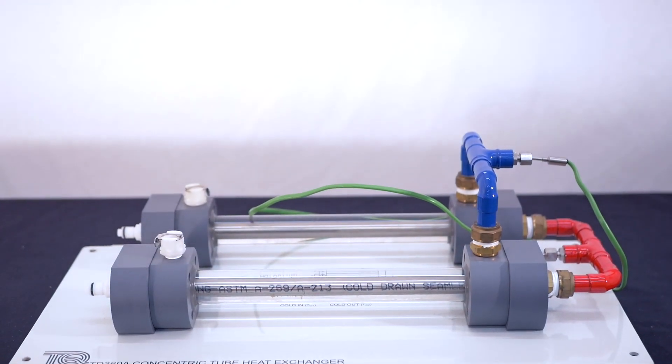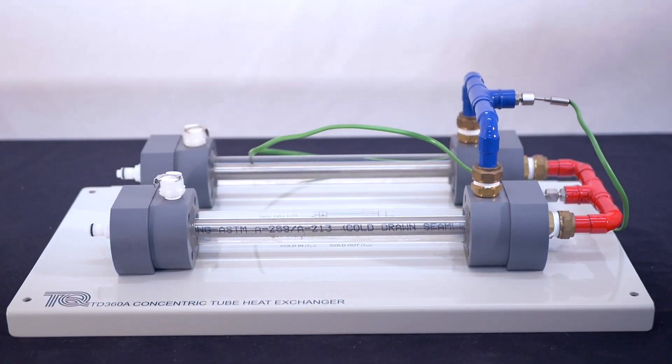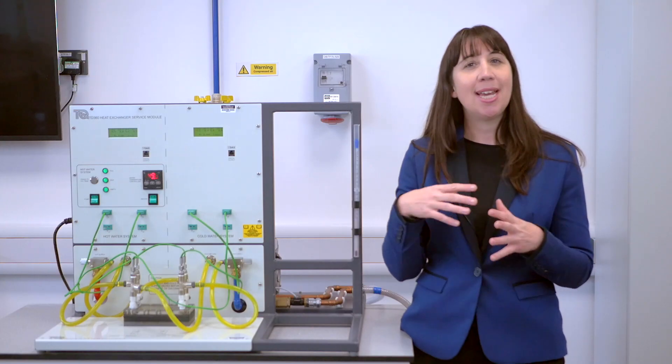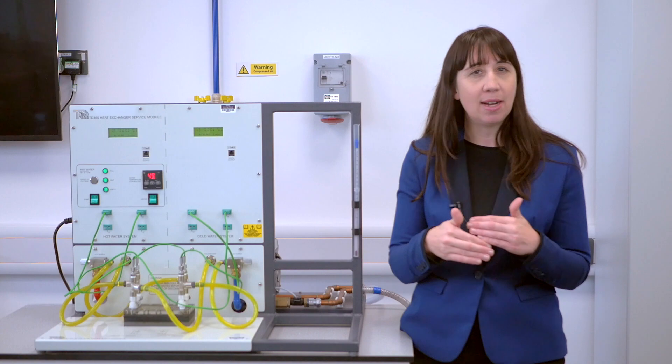The concentric tube heat exchanger, the TD360A, is a simple shell and tube heat exchanger. It has two sets of tubes, each tube with another inside of it.